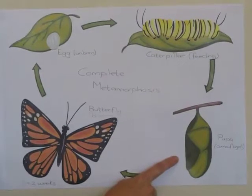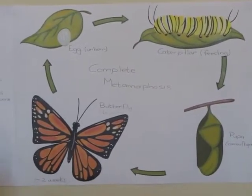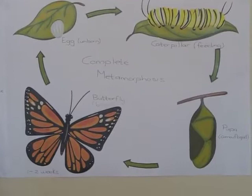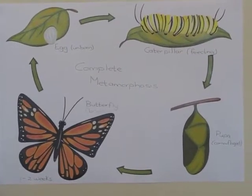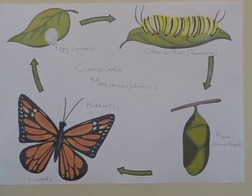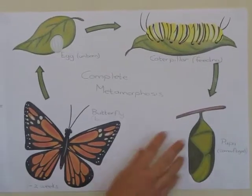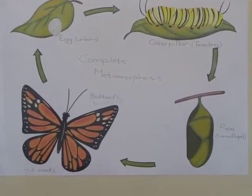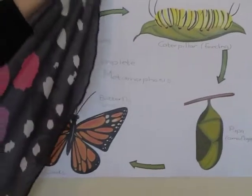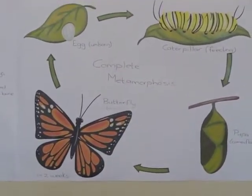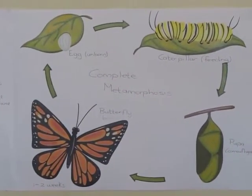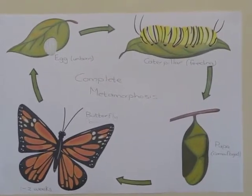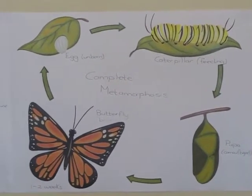From there, the butterfly goes into a pupa, into the cocoon, and it keeps safe there. It's camouflaged and hidden from enemies. Then the butterfly comes out, and there's a beautiful butterfly. This butterfly can live one to two weeks. Alright, let's go to the next stage.